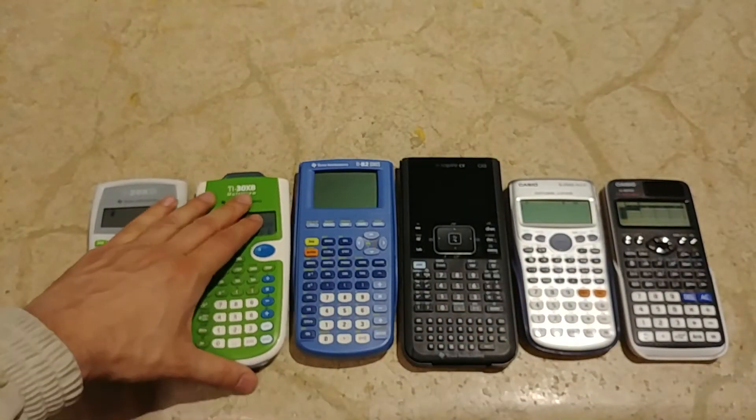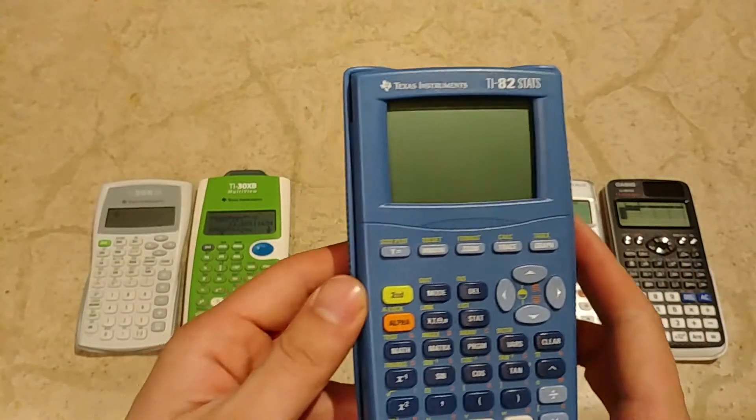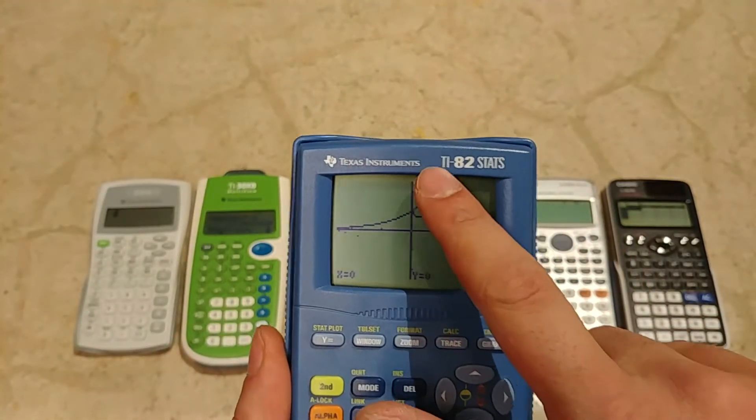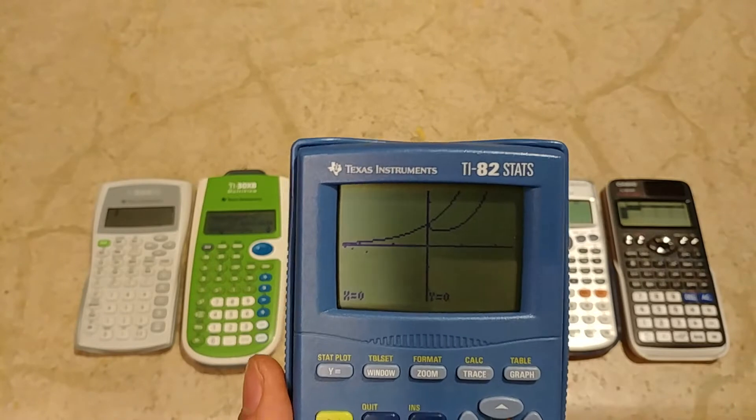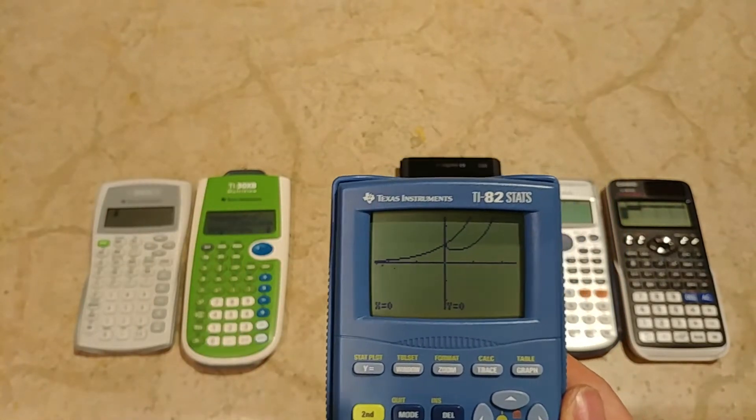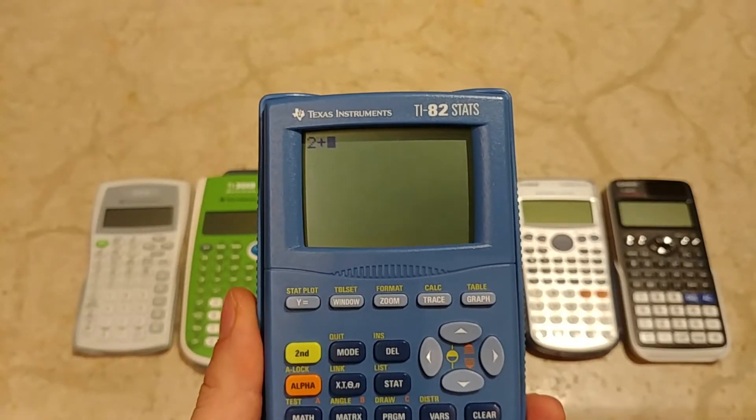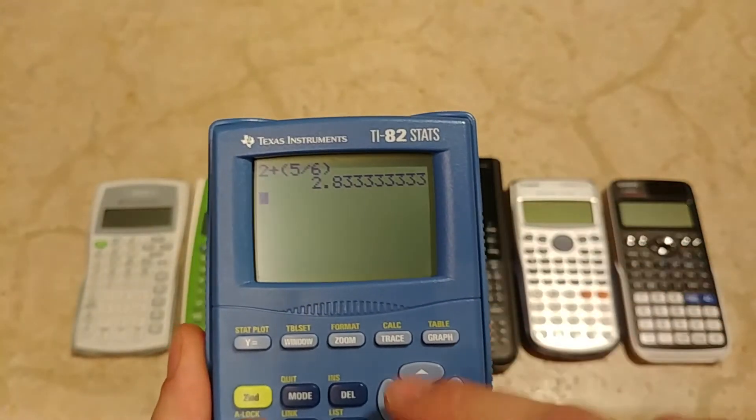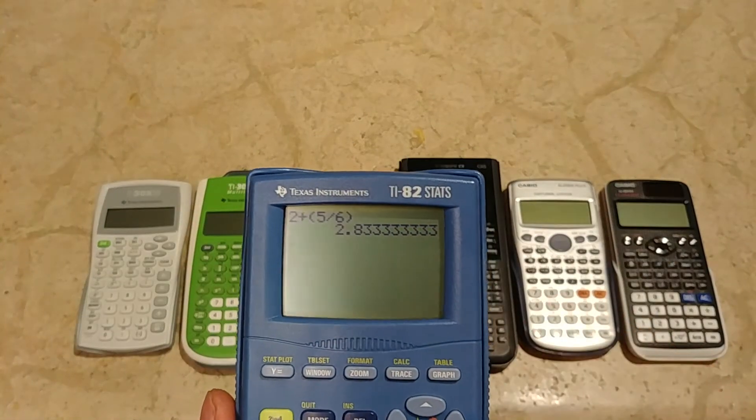Now this is my second scientific calculator and my first graphic calculator, the TI-82 Stats. This is not on the market anymore, now TI starts from the 83 and above. This is a scientific but also graphic calculator. In the normal way we don't have natural display, so we have to write 2 plus bracket 5 divided by 6 equals. We can see we have a continuous display like the TI-30XB, but we don't have natural display.